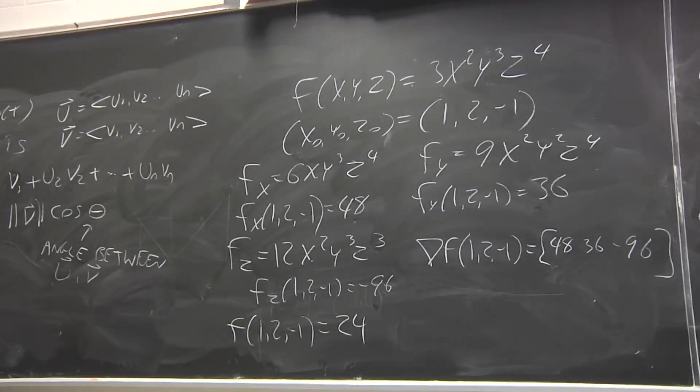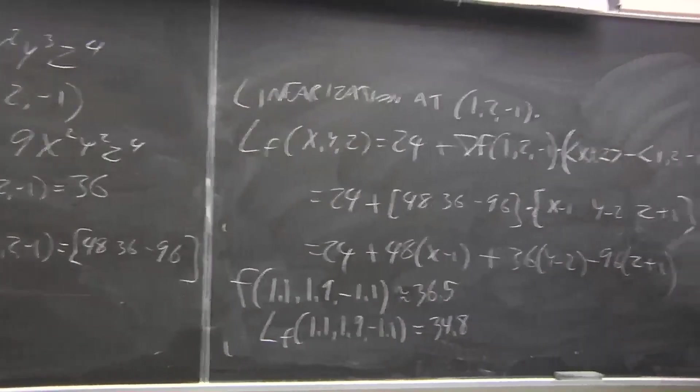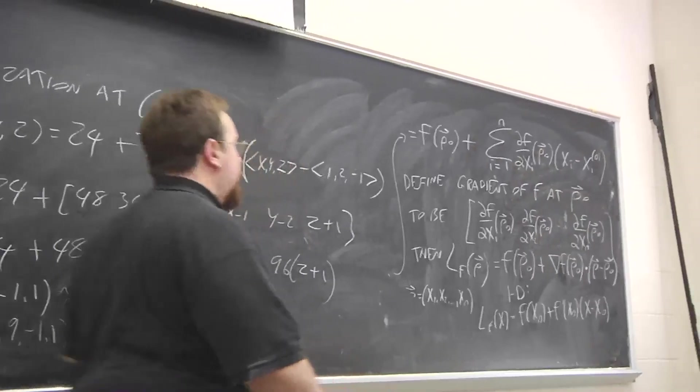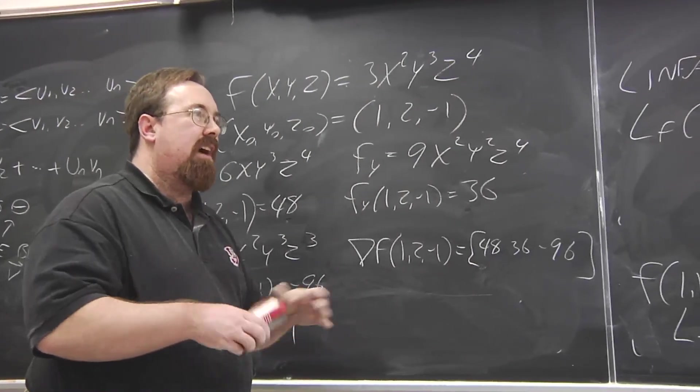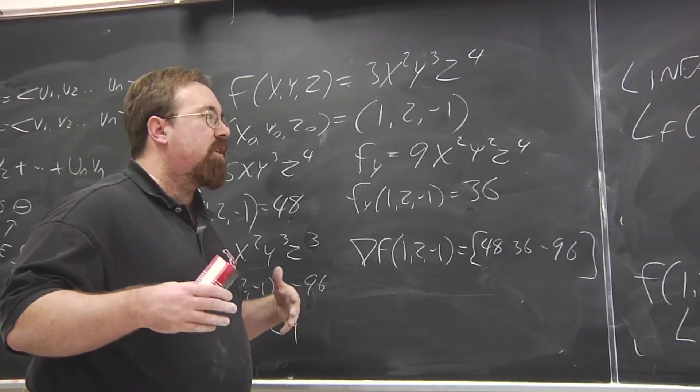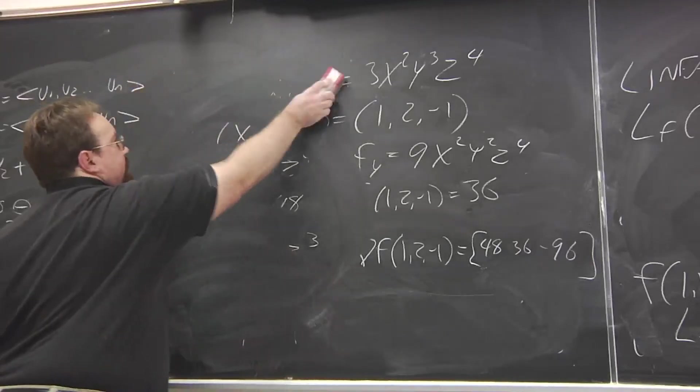So when we go to several variables, we can express the linearization as a dot product of a gradient and a difference of vectors. But we're still talking about scalar valued functions. However many inputs they take, they still output only a single value. What about vector valued functions?